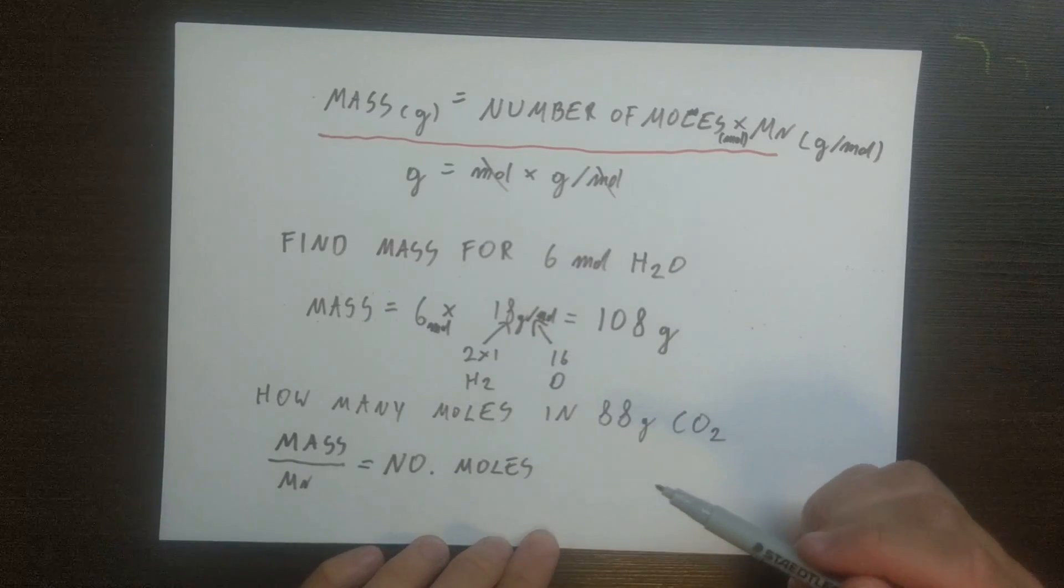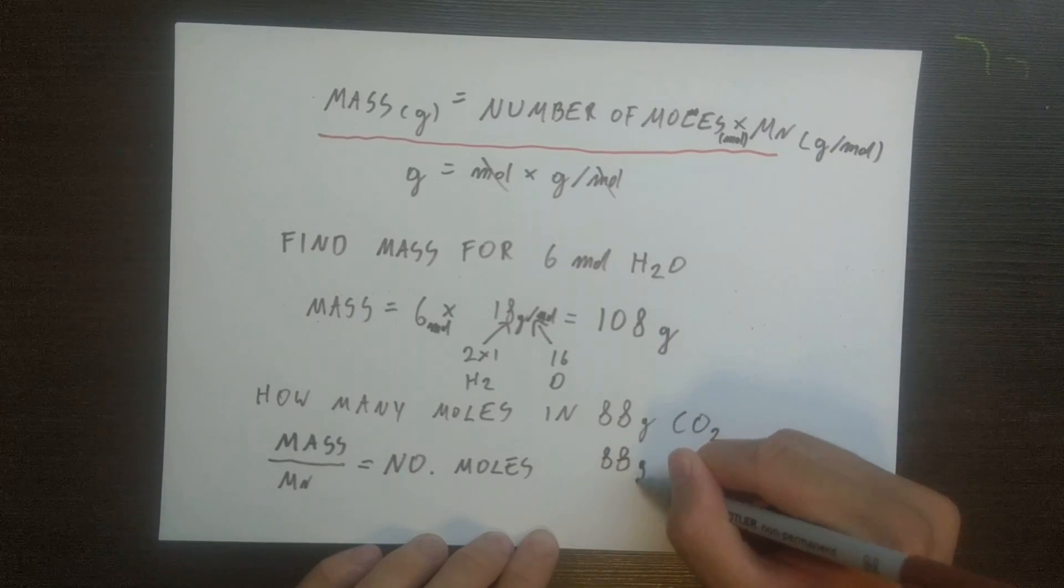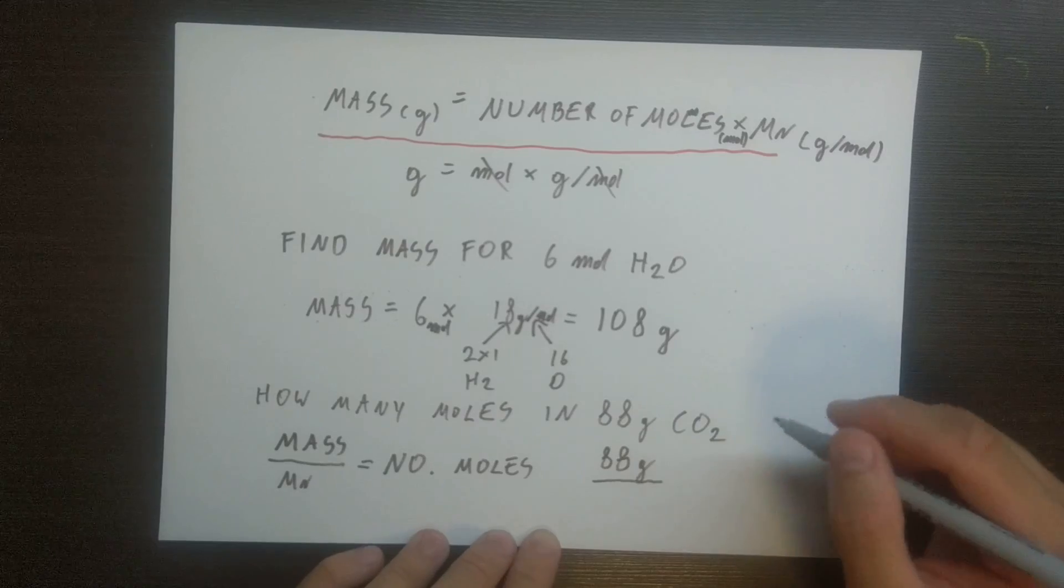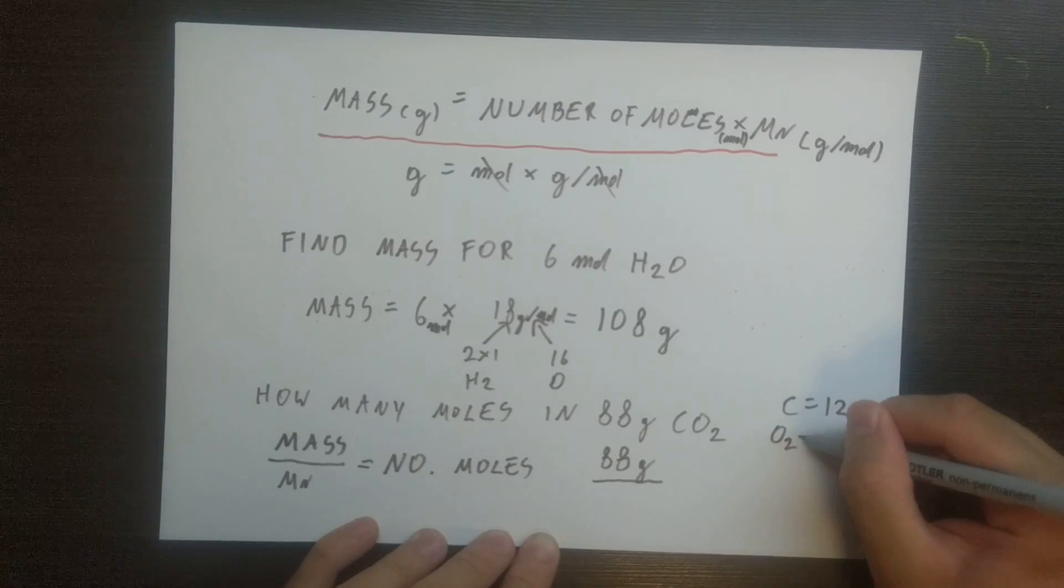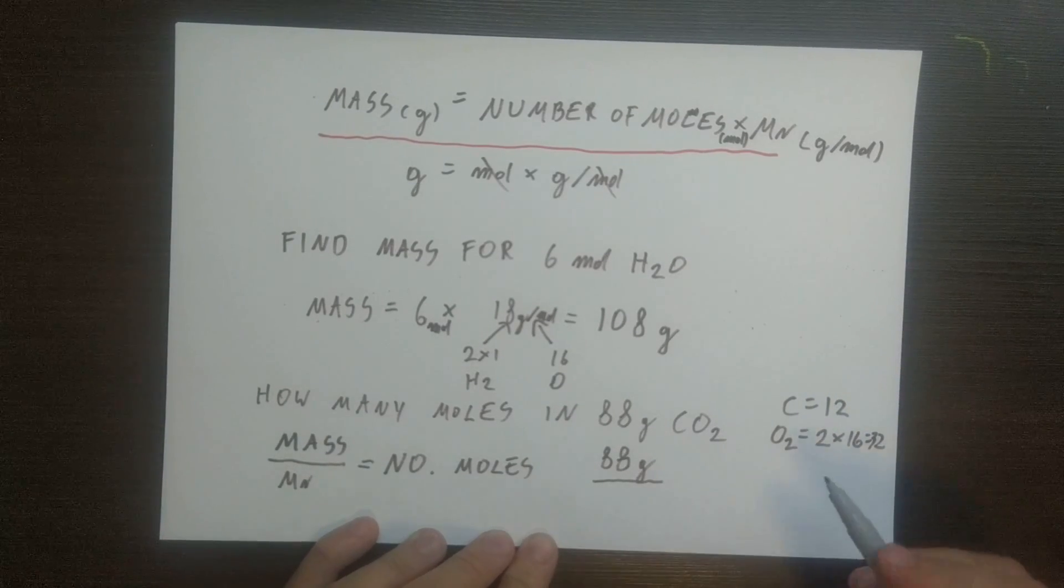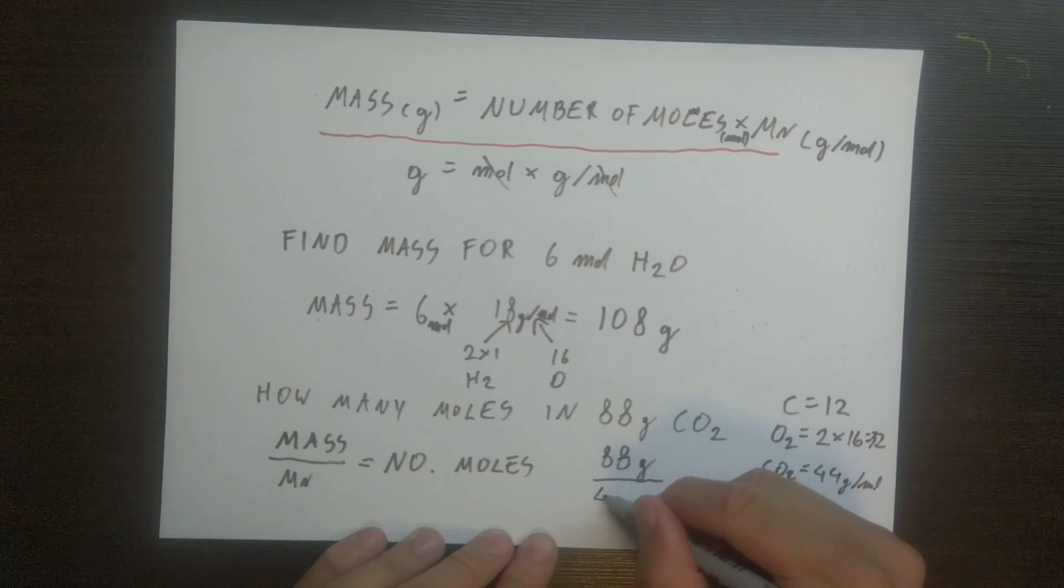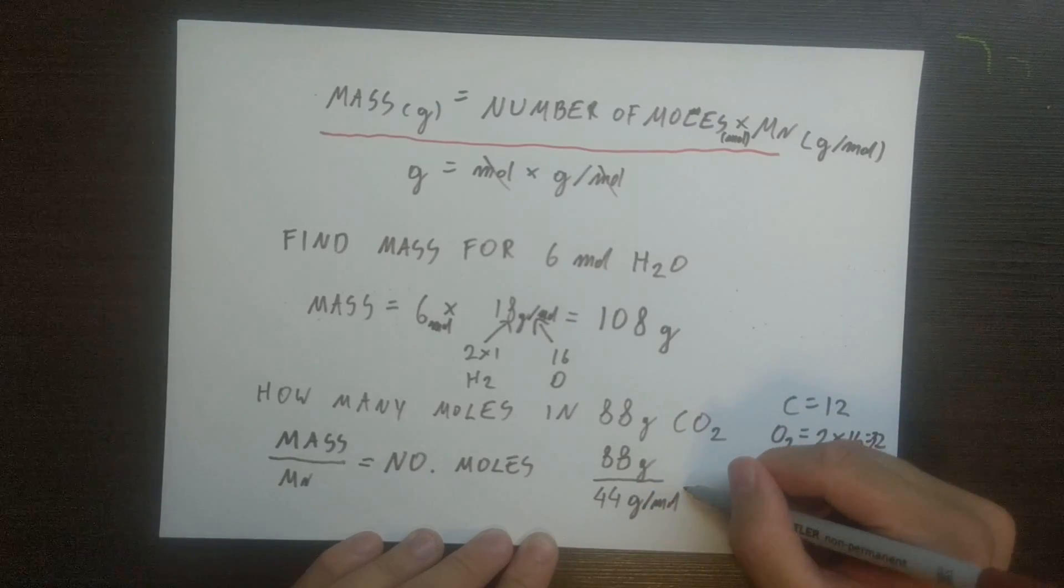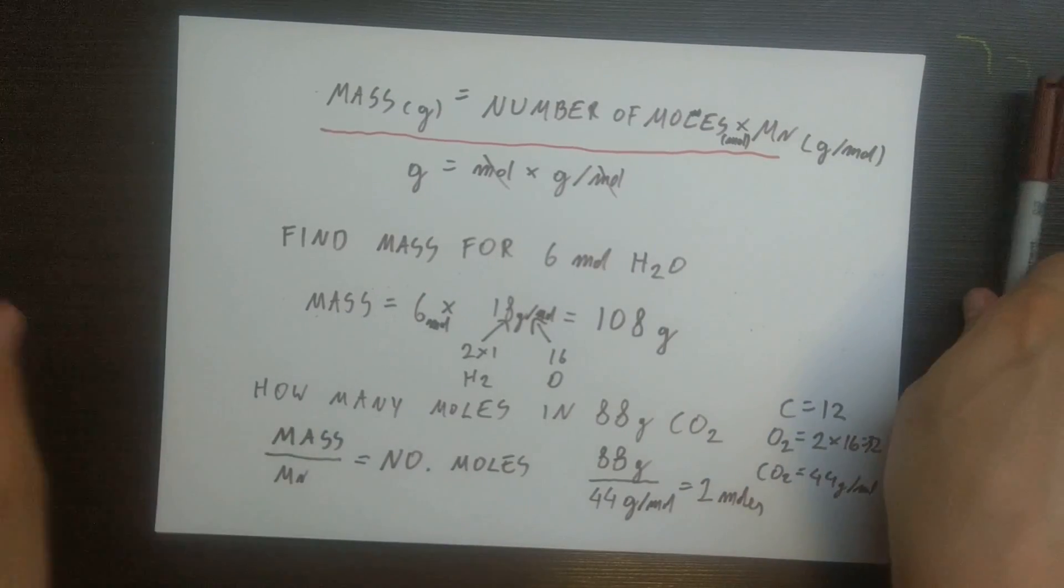What will be the equation? The equation now will look something like this. Mass divided by MR, which equals number of moles. Okay, fantastic. We have an equation we are going to use. What is the mass? The mass is 88 grams as they've given us. We divide that by molecular mass. What is molecular mass of carbon dioxide? Well, carbon is equal to 12, oxygen is equal to 16. So 2 oxygens are 2 times 16, which is 32. So 12 plus 32 is 44. CO2 equals 44 grams per mole. 88 grams divided by 44 grams per mole equals 2 moles. There we go. That is our answer for this question.